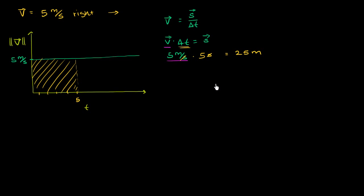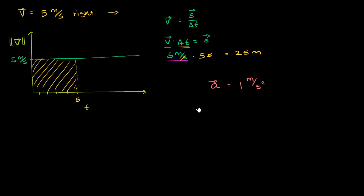Let me draw a slightly different situation where the velocity is changing — a situation with constant acceleration. The acceleration is going to be 1 meter per second per second, so 1 meter per second squared. Let me draw the same type of graph. This is my velocity axis — I'm just going to plot the magnitude of the velocity.